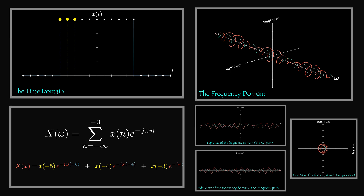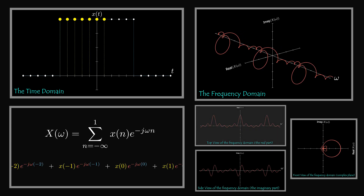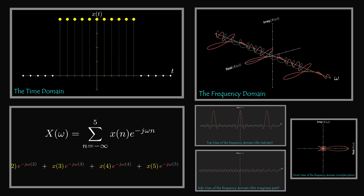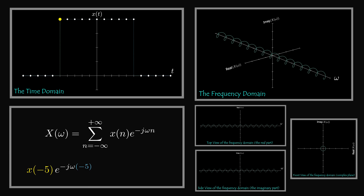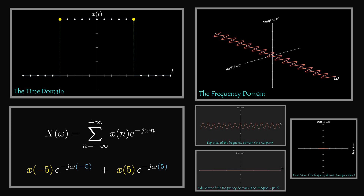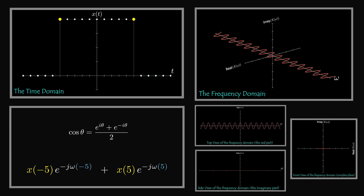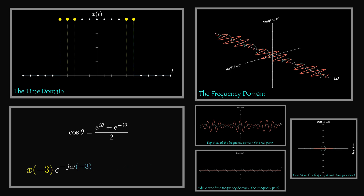Throughout this video, you might wonder why the resultant of the summation of the complex exponentials has only a real part — the imaginary part vanishes completely. That's because each left-hand sample, corresponding to a complex exponential rotating in a negative direction, is accompanied by a right-hand sample corresponding to a complex exponential rotating in a positive direction. When added together, the real parts add while the imaginary parts cancel each other. This can also be verified mathematically from Euler's formula: the summation of two complex exponentials with opposite frequencies equals 2 times cosine, which is real.